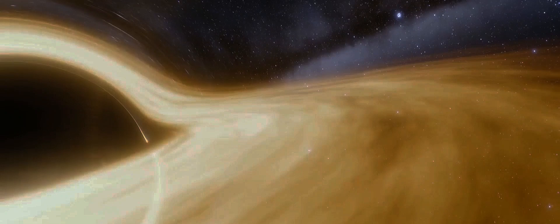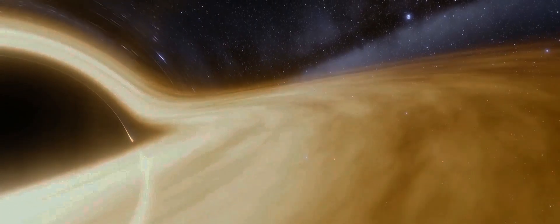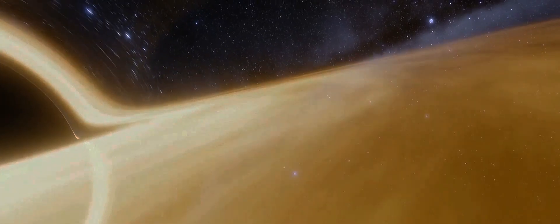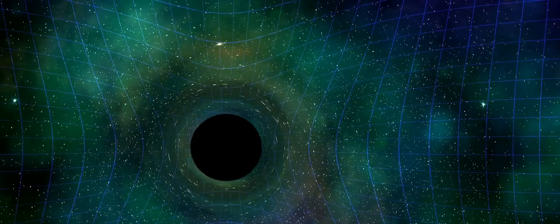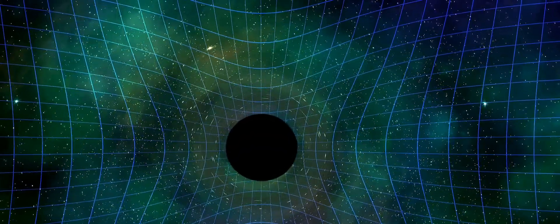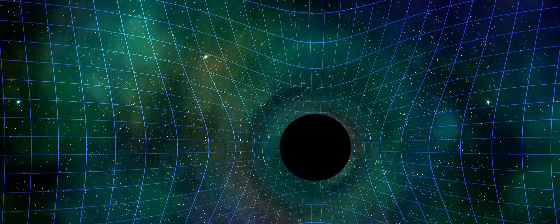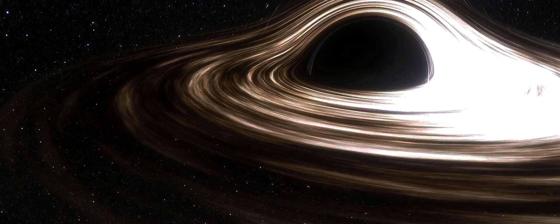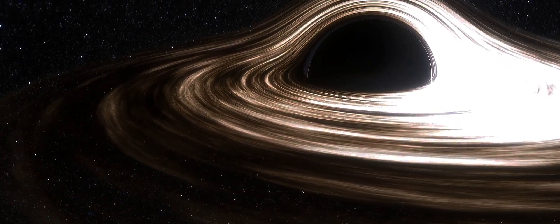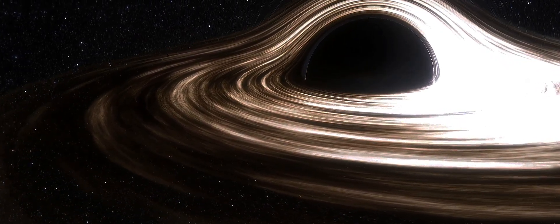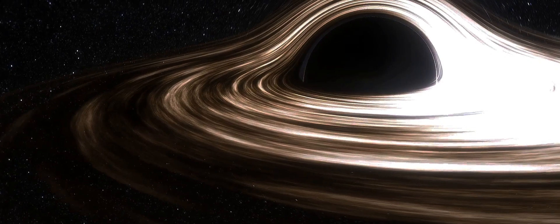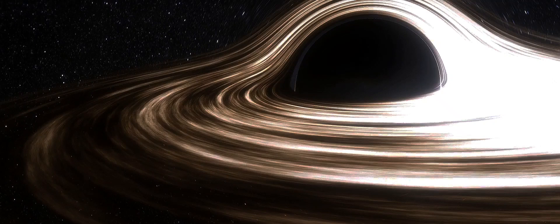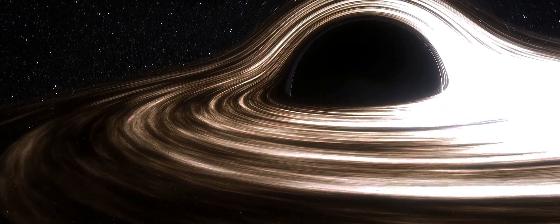But here's where things get interesting and a bit counterintuitive. Unlike the ripples in our pond, these spacetime ripples don't encounter friction. They don't slow down or lose energy as they travel. They keep going, undeterred, at the speed of light, no less. But why? How can this be? It's a fascinating question, one that takes us deep into the heart of Einstein's theory of general relativity and the very nature of spacetime itself. It challenges our everyday experiences of movement and friction, inviting us to see the universe in a whole new light.